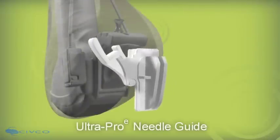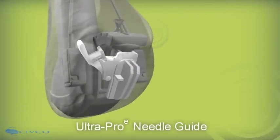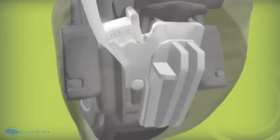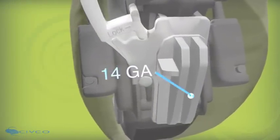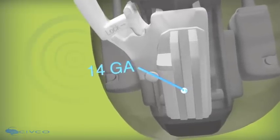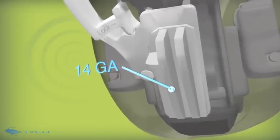Using proper sterile technique, attach the UltraPro E needle guide onto the bracket and lock in place with a single click. Through its open channel, the UltraPro E facilitates the initial orientation of the track needle. The guide attaches to the reusable tracking bracket and currently accepts 14 gauge and smaller instruments.